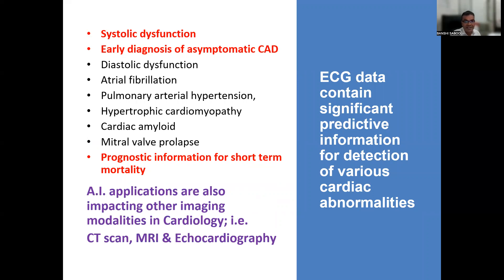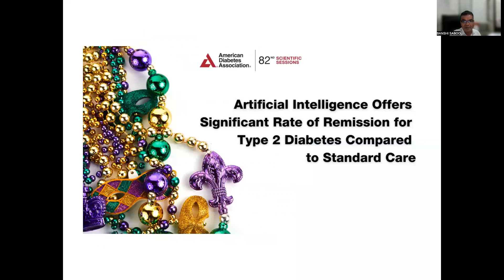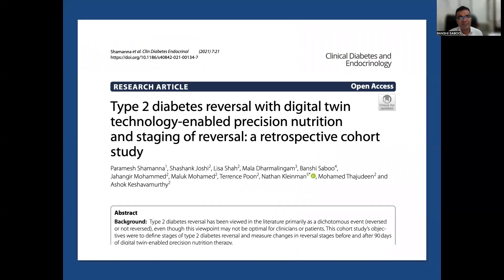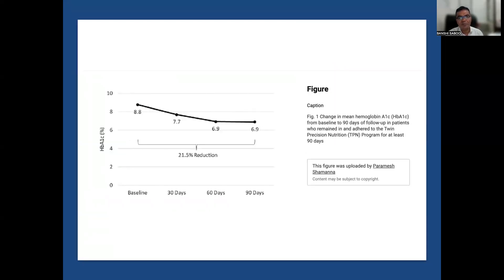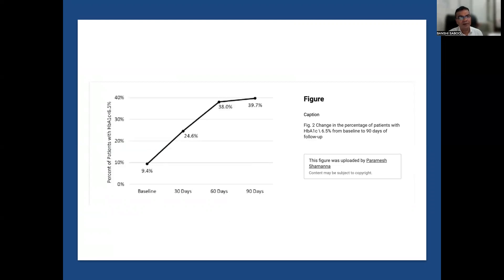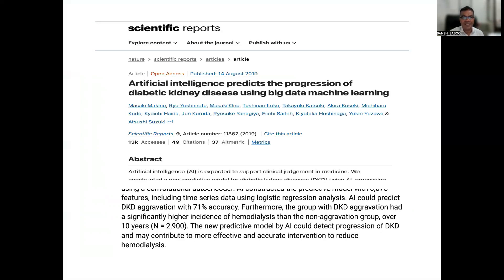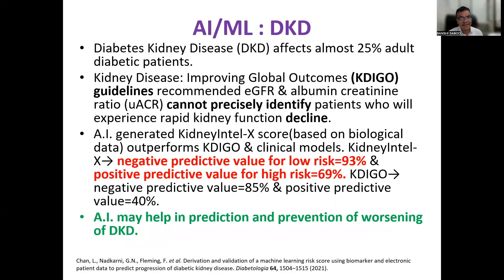AI applications are also impacting other imaging modalities in cardiology, particularly echocardiography, for diabetic patients. AI offers a significant rate of remission for Type 2 diabetes compared to standard care — published at the 82nd American Diabetes Association meeting. In that paper on diabetes reversal, HbA1c improved from 8.8% to 6.9%, and more than one-third of patients achieved HbA1c less than 6.5% in just 90 days. AI also predicts progression of diabetic kidney disease using big data machine learning.